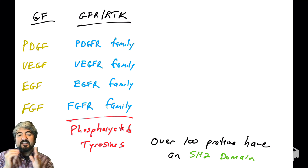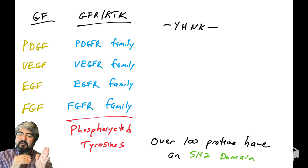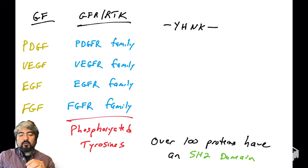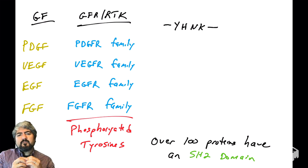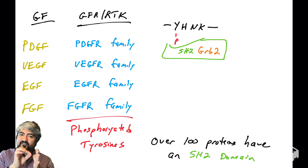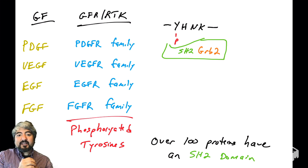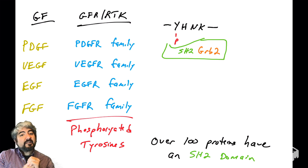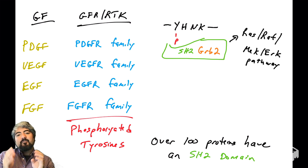I want to briefly discuss two proteins that have SH2 domains, because they play a role in two important pathways. Here is an amino acid stretch — Y, H, and K — and when that tyrosine becomes phosphorylated, that is a binding site for a protein called GRB2. GRB2 has an SH2 domain and binds a phosphorylated tyrosine with those specific flanking amino acids. This sequence, or something very similar, is found in many growth factor receptors and is going to trigger the RAS-RAF-MEK-ERK pathway.